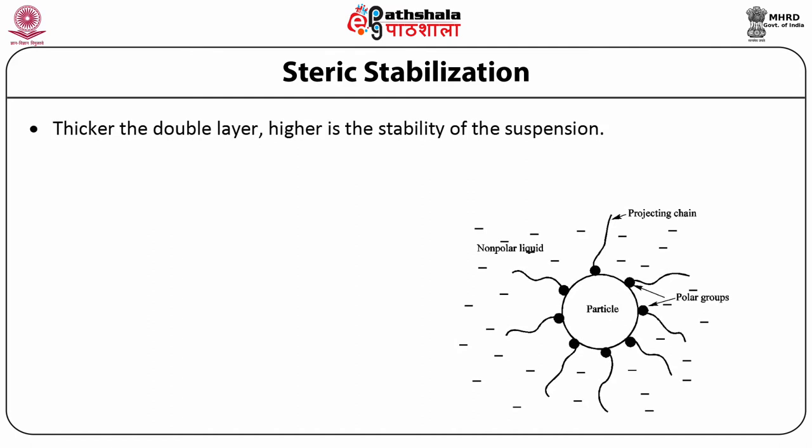Electrostatic stabilization is not effective for all small particles, and it requires strong acids or bases which may not be desirable. Therefore, steric stabilization is often the preferred technique. In steric stabilization, a long chain molecule is adsorbed on the particle surface — part of the molecule is adsorbed and a major part projects out. If the solvent is a good solvent for the polymer, there is a decrease in enthalpy as the polymer chains come in contact with the solvent, and the polymer tends to open up to maximize its contact with the solvent.